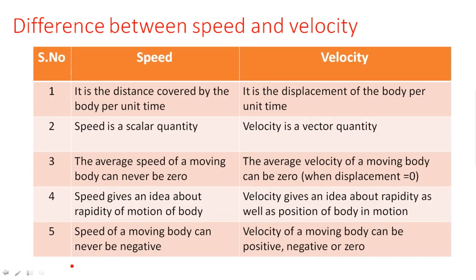Now let us see some differences between speed and velocity. Speed is the distance covered by the body per unit time. The formula is: speed = distance / time, or s = d/t.